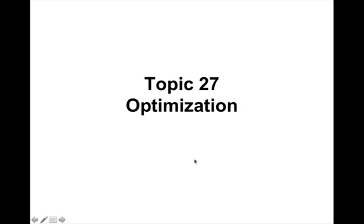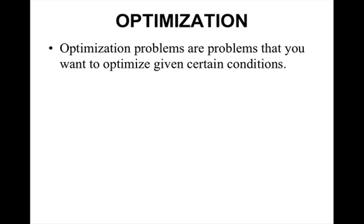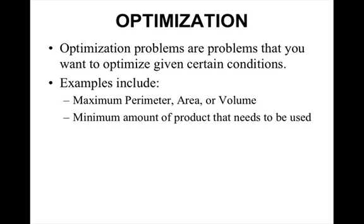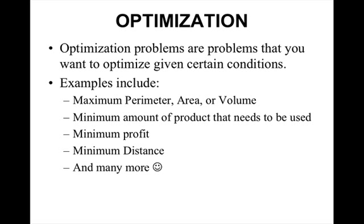Hey, calculus class. Today we are going to learn topic 27, optimization. Optimization problems are problems where you want to optimize a quantity given certain conditions. Examples of these include maximum perimeter, area, or volume, minimum amount of product that needs to be used, minimum profit, minimum distance, and of course there are many more.